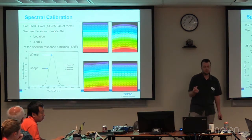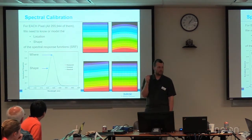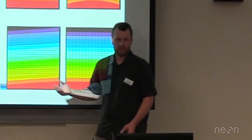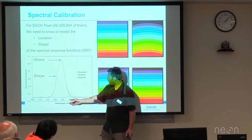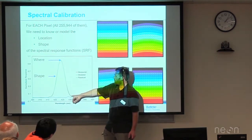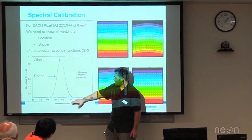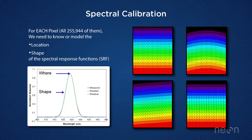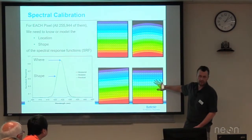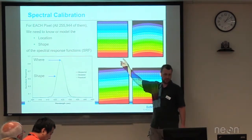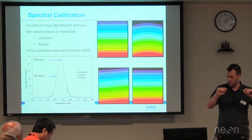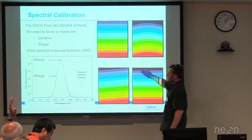Jumping into spectral calibration — there are really two things we need to know. Every pixel on that detector accepts some wavelengths of light; we have to know what wavelengths those are. Given the way an imaging spectrometer is built, those can generally be assumed to be a Gaussian spectral response function. Here we have a few different measurement techniques: the red curve is measured, the green is modeled, and the blue is the residual. In this case a Gaussian spectral response function did a good job. What we want to know is whether that's the right assumption, where the band center is, and the width. We want a situation where the same wavelength falls all the way across a given row of pixels.